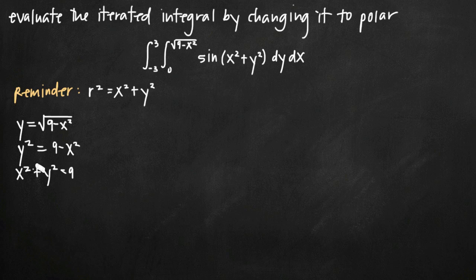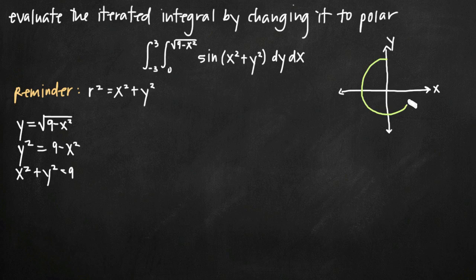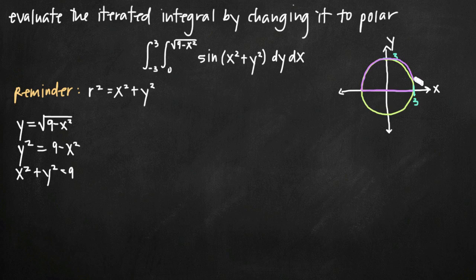We can tell right away that x squared plus y squared equals 9 is the equation of a circle with radius 3. If we sketch the circle with radius 3 on a Cartesian coordinate system, labeling the points 3 and negative 3 on the x-axis, this is our circle with radius 3. From the iterated integral, the inner limits tell us the lowest value y can attain is 0, so we're not considering area below y equals 0. The upper limit for y is bounded by this circle, so we're looking at the upper half circle.